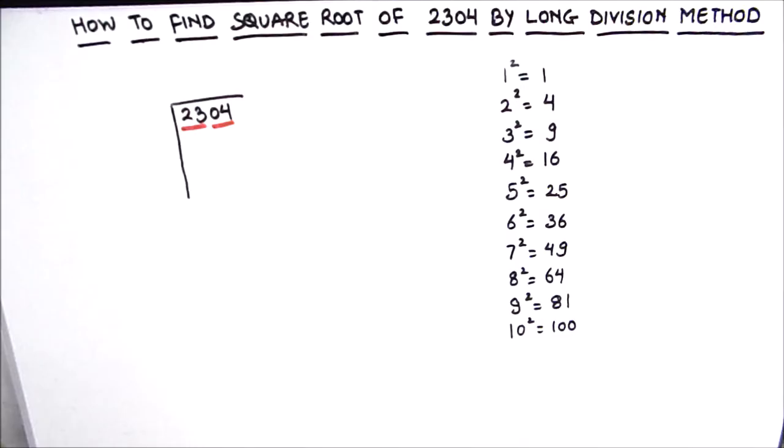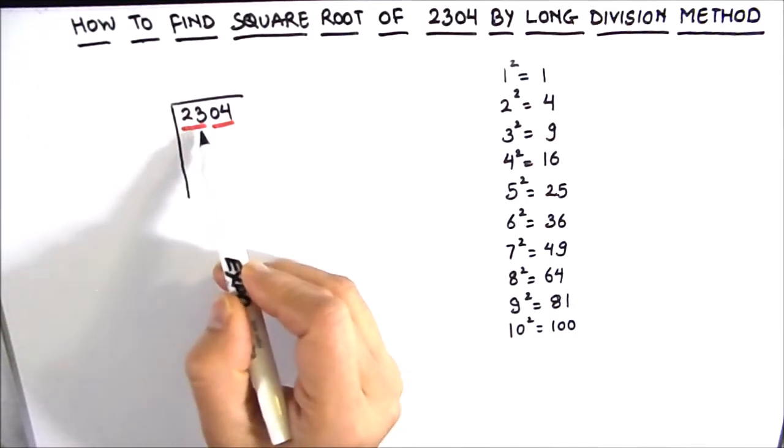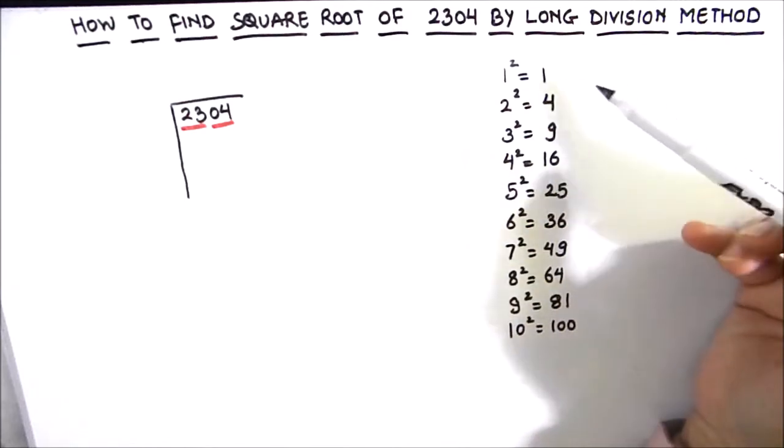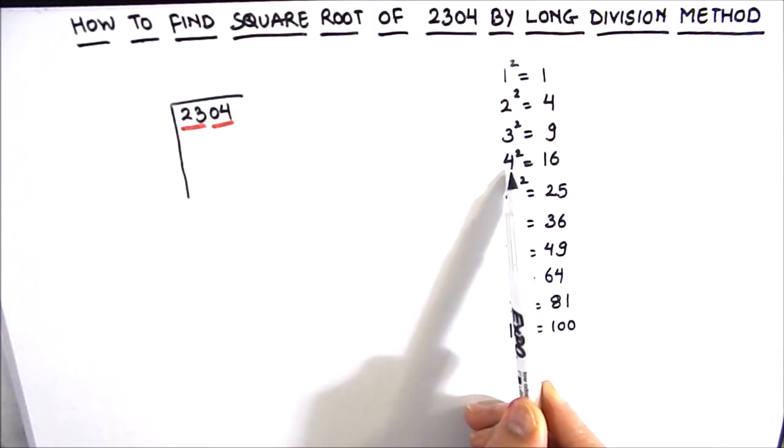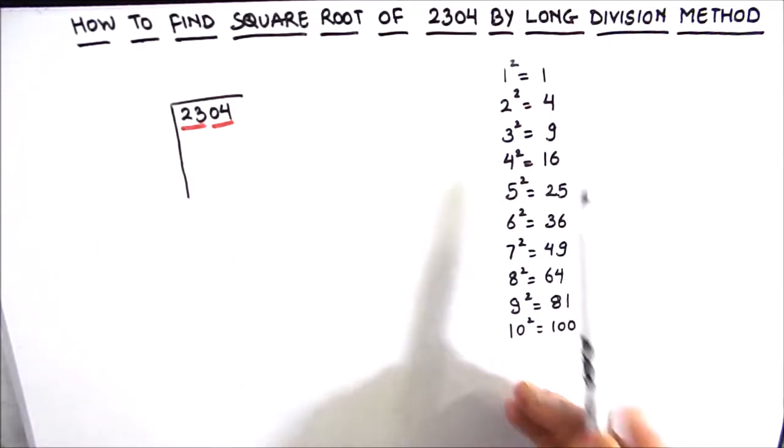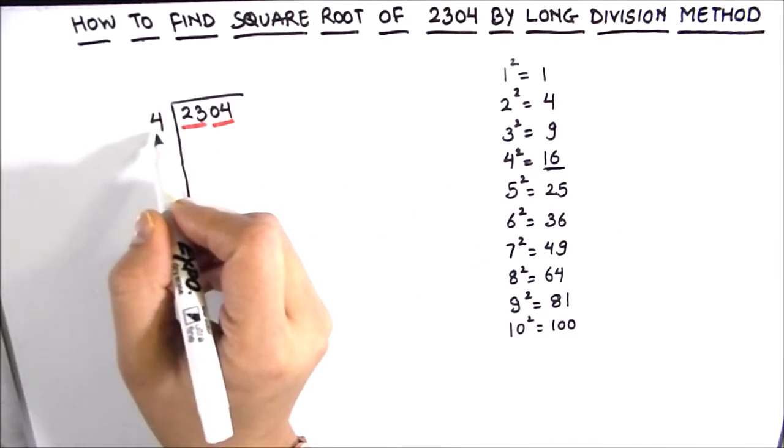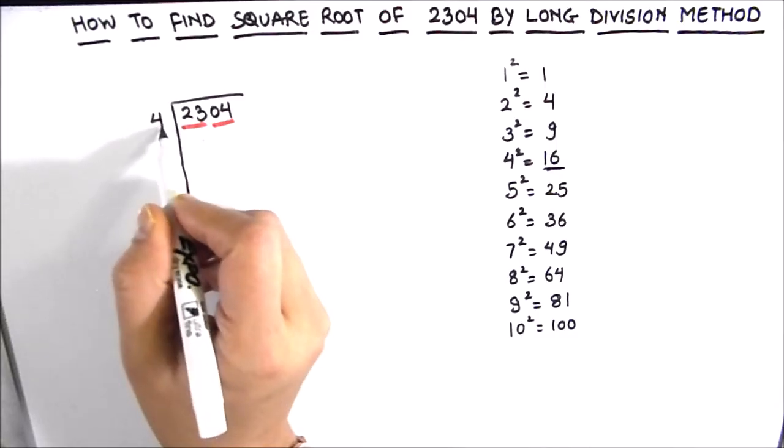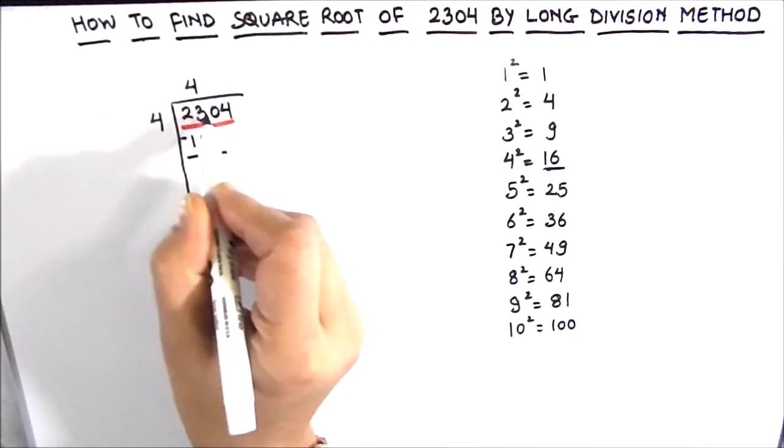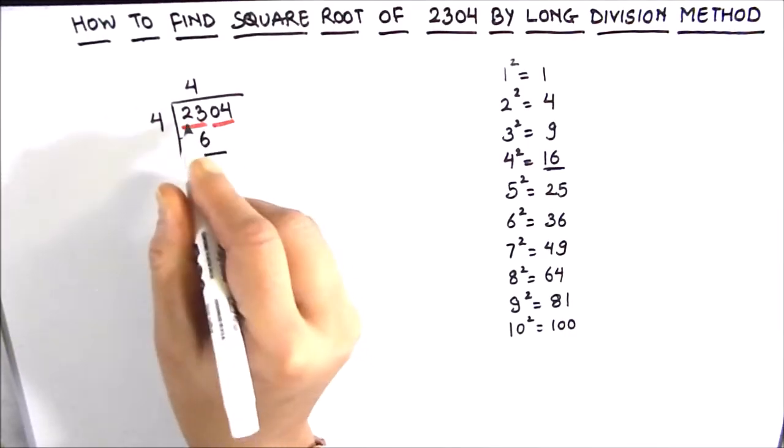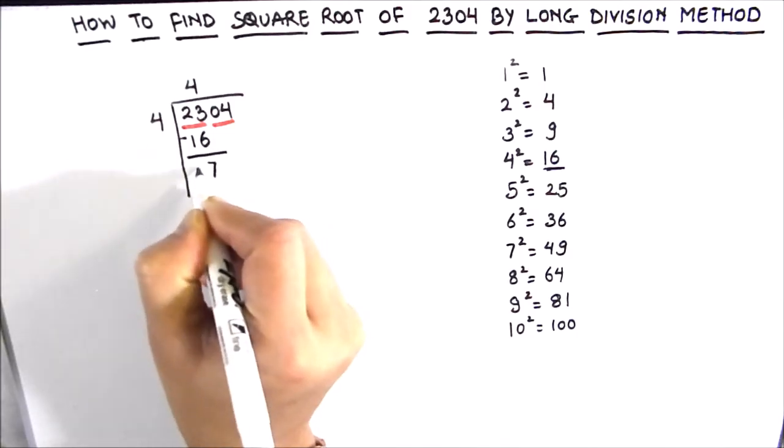Now the second step here is to think of the largest square number whose square is equal to 23 or just less than 23. From our square numbers we can see that the number is 4 because 4 squared is 16, while 5 squared will be more than 23. So we will take 4 and write this square number here and take it as a divisor. 4 times 4 will be 16. Now we will subtract the two numbers. 3 minus 6 is not possible so we will borrow. 13 minus 6 is 7 and this is 0.